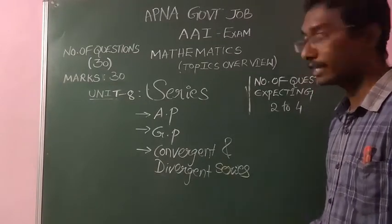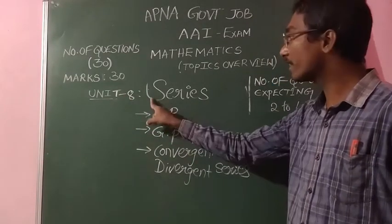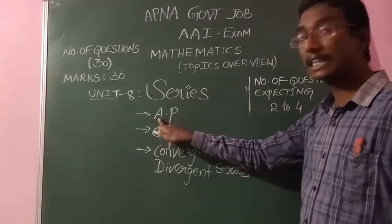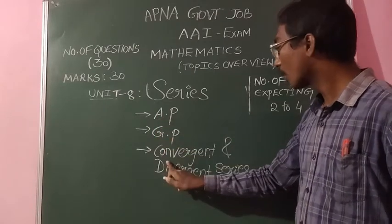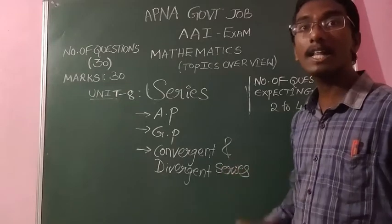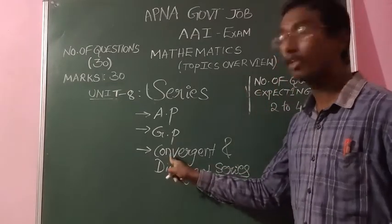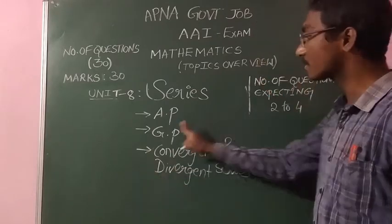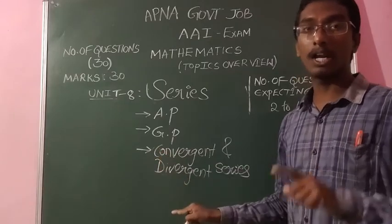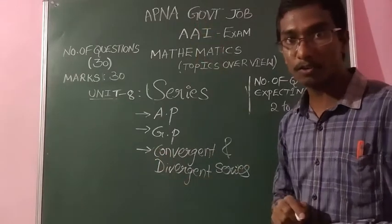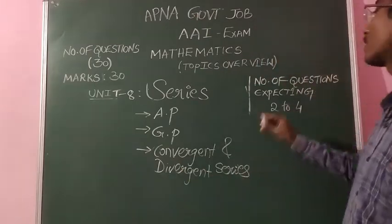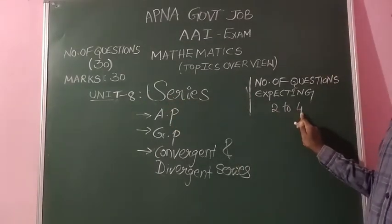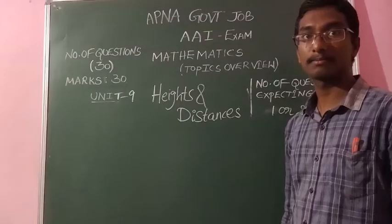After Unit 7, Unit 8 is Series — a very important unit. Subtopics include arithmetic progression, geometric progression, and convergent and divergent series. There will definitely be at least one question from convergent and divergent topics, which are explained using limits from Unit 2. By previous year analysis, there will be at least two questions, with a chance of up to four questions from this unit.